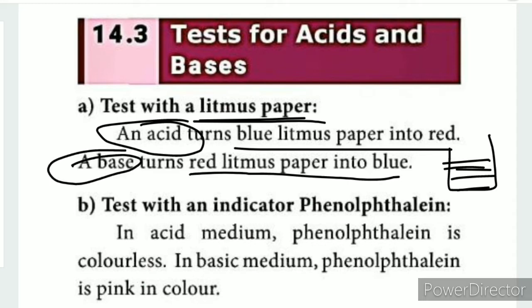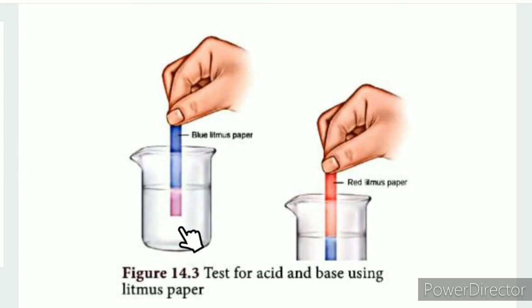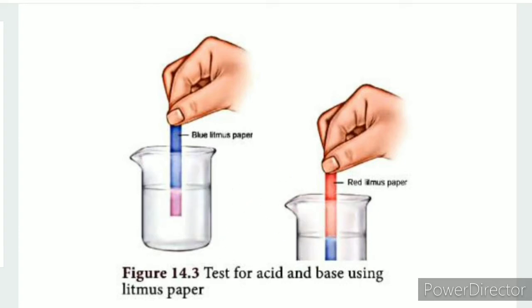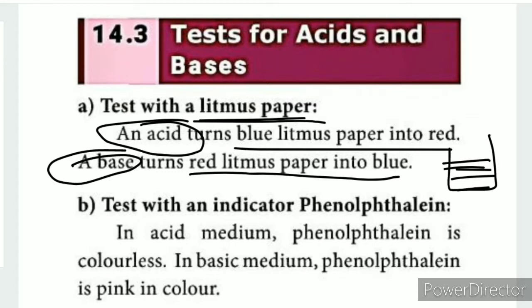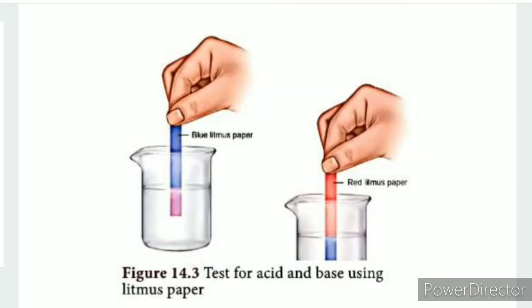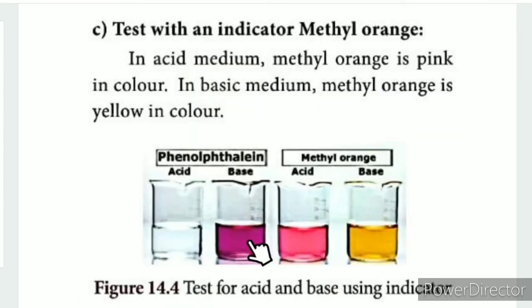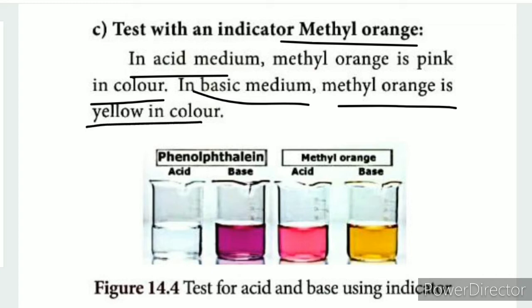Blue litmus paper turns red in acid. Red litmus paper turns blue in base. Methyl orange in acid shows pink color, and in base shows yellow color.